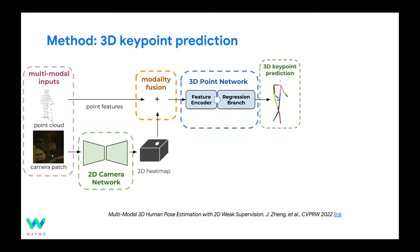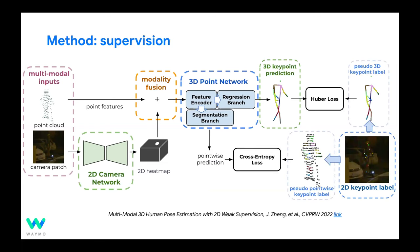The key aspect of this work is how we do the training. We have 2D keypoints and map them to pseudo 3D keypoint locations. We apply Huber loss between predictions and the pseudo 3D keypoints, plus a segmentation loss at the 2D keypoint locations. With both regression and segmentation branches, we get better keypoint predictions.